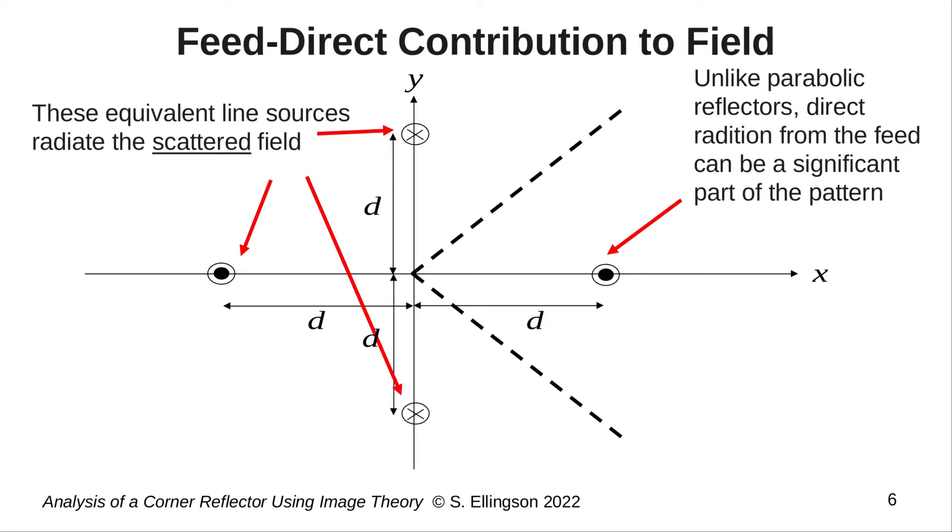As I explained in the previous slide, three additional line sources stand in for reflections from the plates. One other thing to keep in mind is that the contribution to the field from the feed directly is going to be relatively important for a corner reflector. This is very much unlike what normally happens for a parabolic, that is for a collimating reflector, where a well-designed feed typically does not contribute much directly to the far field, only through reflection.